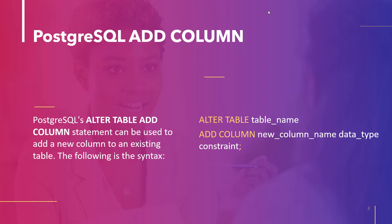Here, table_name is the name of the table where we want to add a new column. New_column_name is the name of the new column to be added. Data type is the data type for the new column values, and constraint specifies the constraint for the new column. When we add a new column, PostgreSQL appends it at the end of the table. There is no option to specify the position of the new column in PostgreSQL.